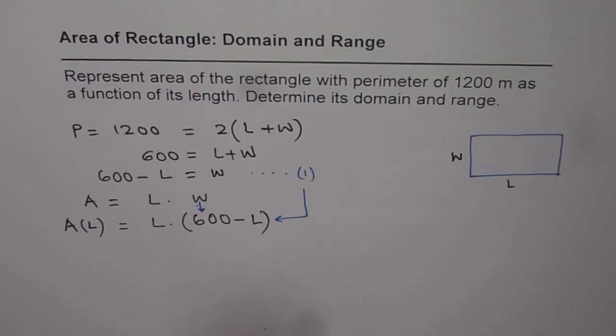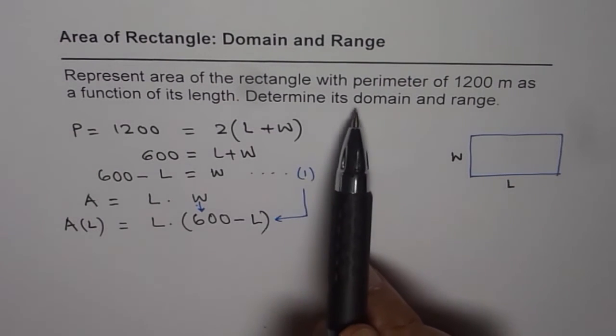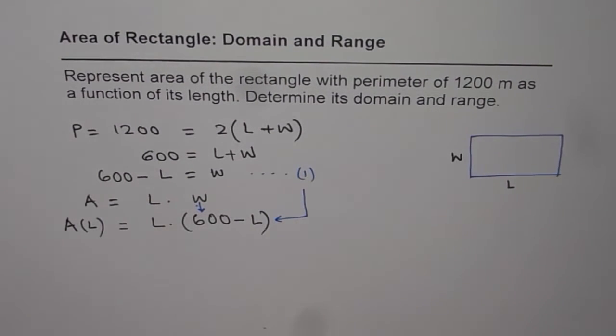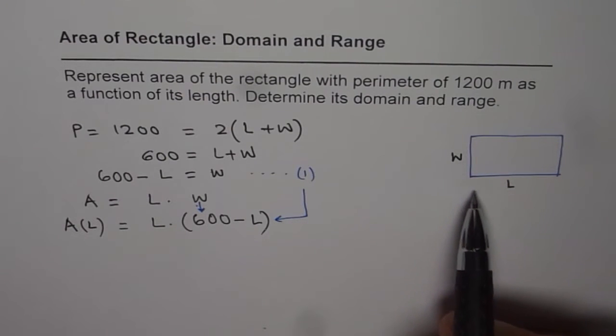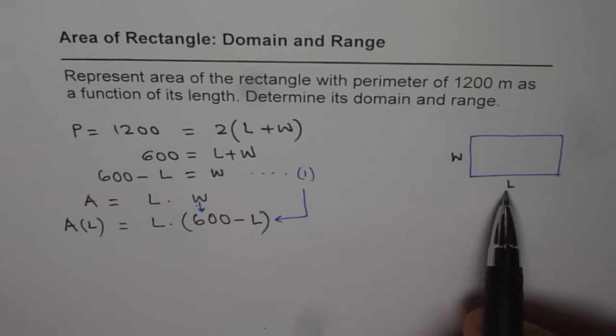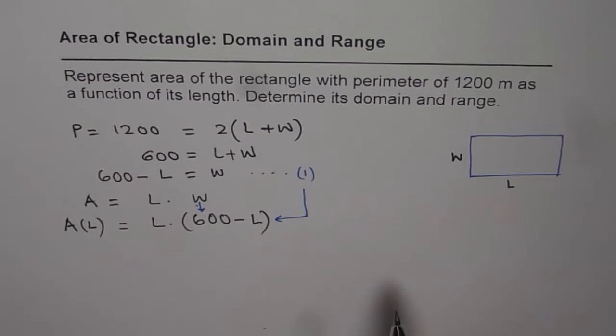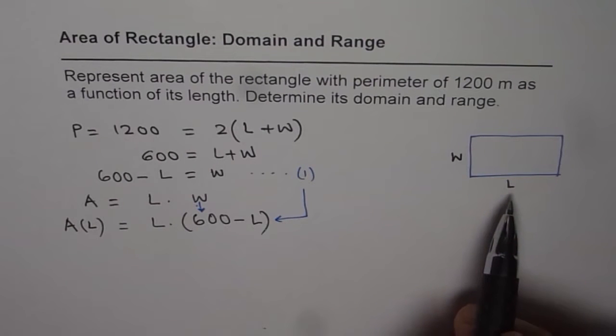Now, the second part of this question is, determine its domain and range. Now, how do we find domain and range for this function? Well, when we know that L and W are actually length and width, we know one thing, that we cannot have length as a negative number. So that kind of gives us the domain.